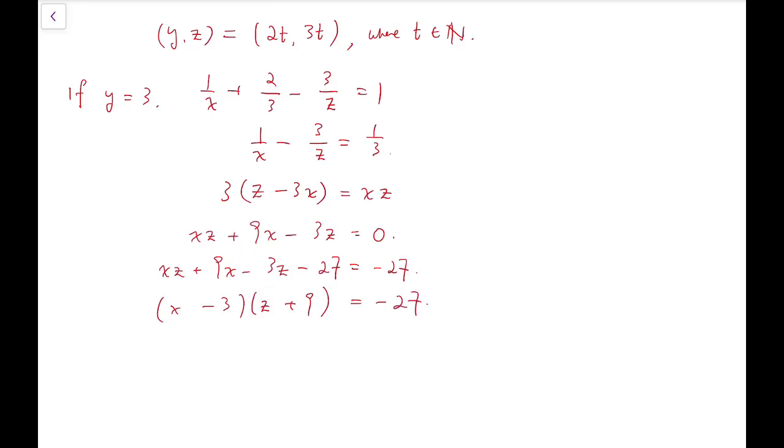And I'm going to factorize it as planned. And it becomes minus 27. For two integers to have product that is a negative number, one of them must be negative. However,